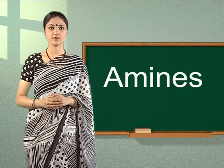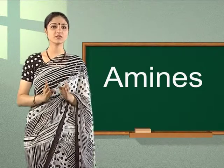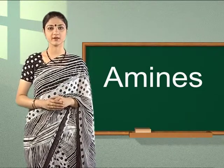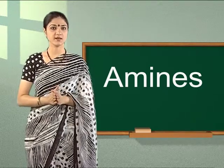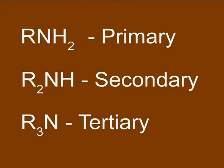Amines are very important organic compounds because they play an important role in protein synthesis. Amines and ammonia molecules have organic groups — alkyl or aryl groups — where one or more hydrogen atoms are replaced. An amine having the general formula RNH2, R2NH, or R3N are respectively primary, secondary, and tertiary amines, where R is any alkyl or aryl group.